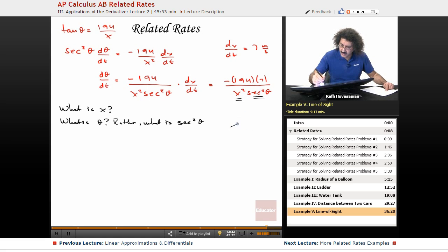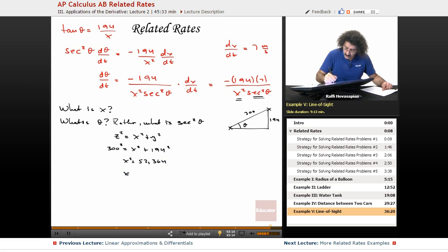So we have this triangle. This was 194. The man was right here and the bird was right here. They wanted this rate when the bird is 300 feet away. So this is z. I have z squared equals x squared plus y squared. z is 300 equals x squared plus 194 squared. So x squared is going to equal 52,364, which means x is actually going to equal 228.8. That takes care of x.